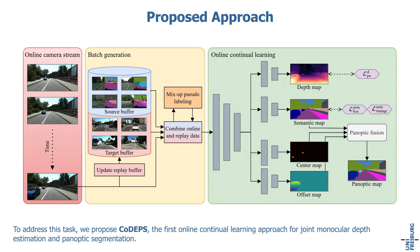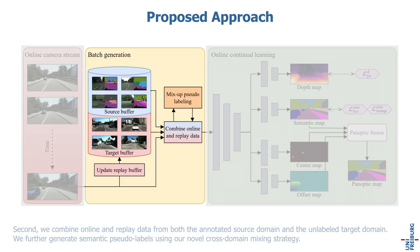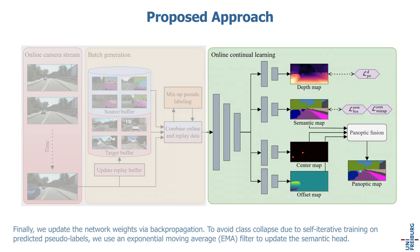To address this task, we propose CodeApps, the first online continual learning approach for joint monocular depth estimation and panoptic segmentation. First, data from an online camera stream is revealed to CodeApps frame by frame. Second, we combine online and replay data from both the annotated source domain and the unlabeled target domain. We further generate semantic pseudo-labels using our novel cross-domain mixing strategy. Finally, we update the network weights via backpropagation. To avoid class collapse due to self-iterative training on predicted pseudo-labels, we use an Exponential Moving Average filter to update the semantic head.